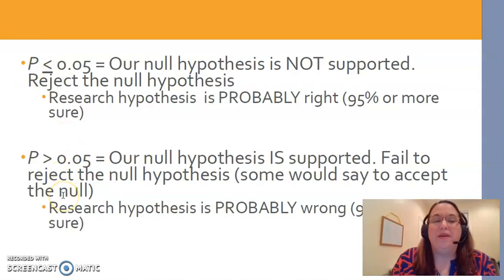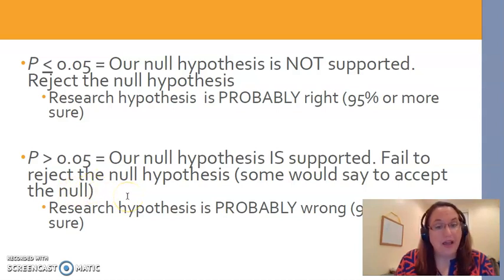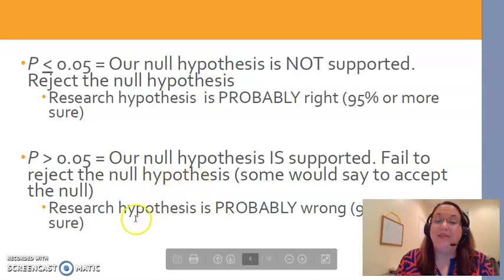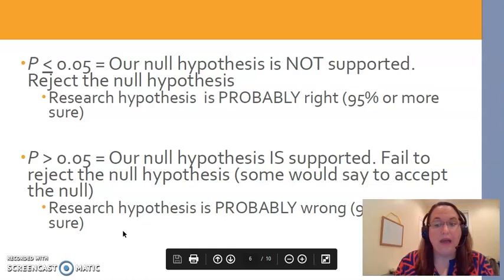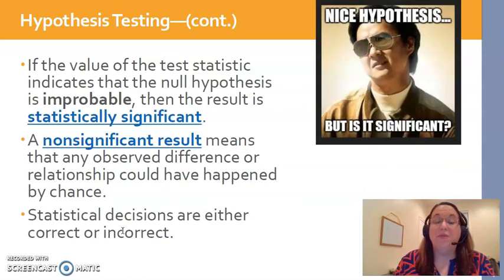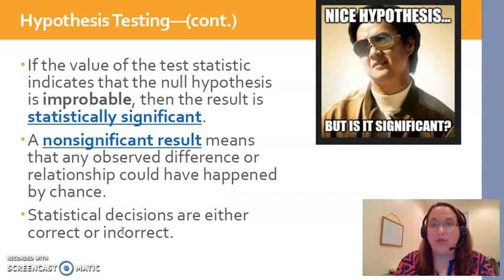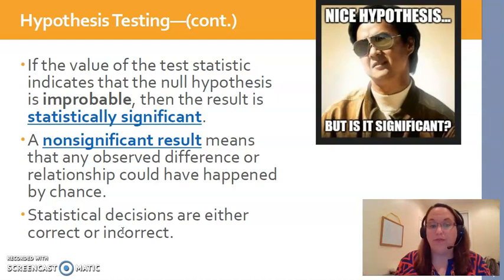If our p-value were 0.123, that is above 0.05. That means our null hypothesis is supported by the data in our study — therefore we will not reject the null hypothesis, and we would say that the research hypothesis is probably wrong. So again, we're looking at the test of statistical significance — that p-value. We're looking for p-values in the data charts in our studies. If the p-value is less than or equal to 0.05, we're 95% or more sure that the results are accurate and not the result of chance or some fluke event.